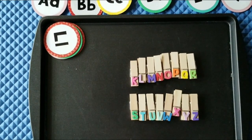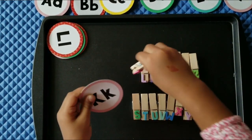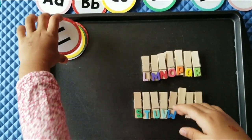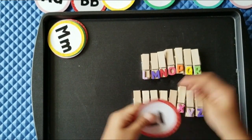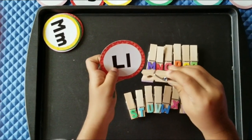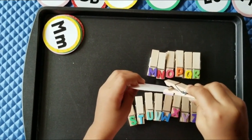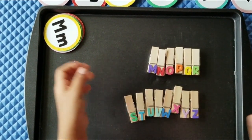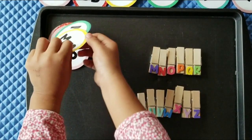This is letter K. It sounds K. Kangaroo. The letter L. It sounds L. Lion. This is letter M. It sounds M. Monkey.